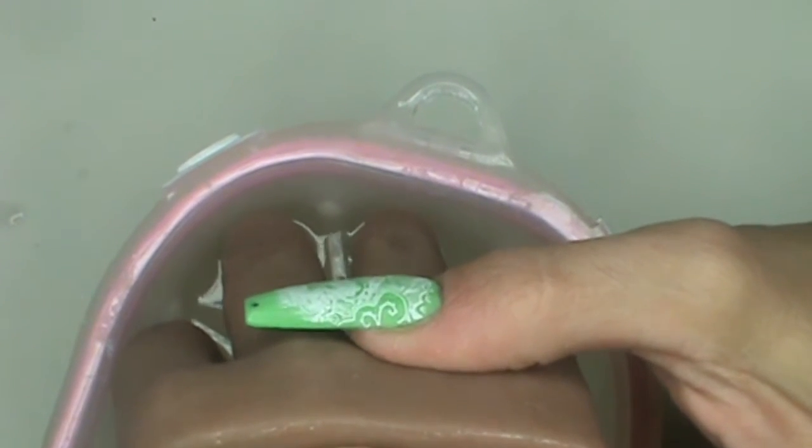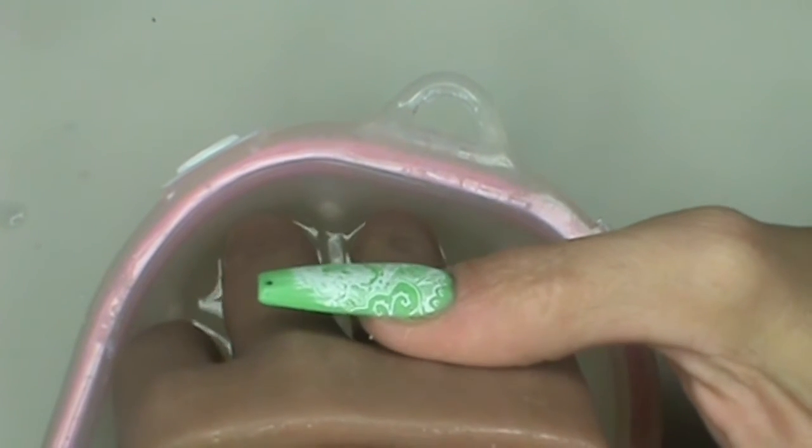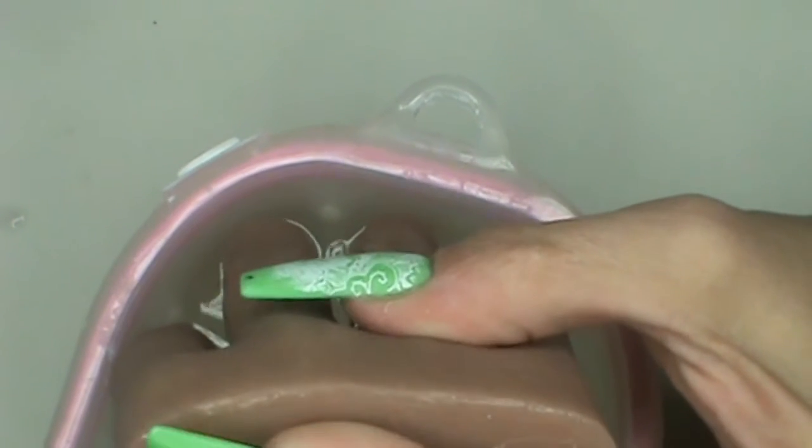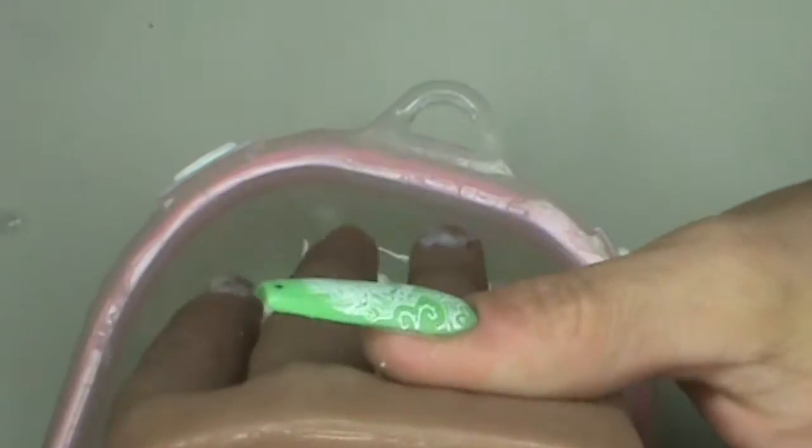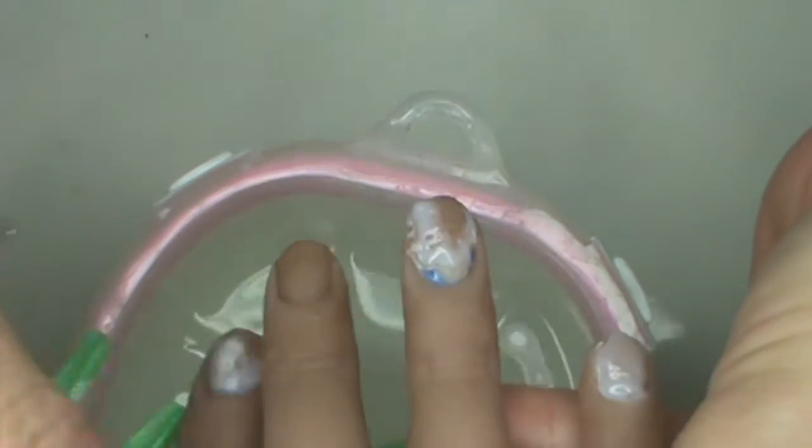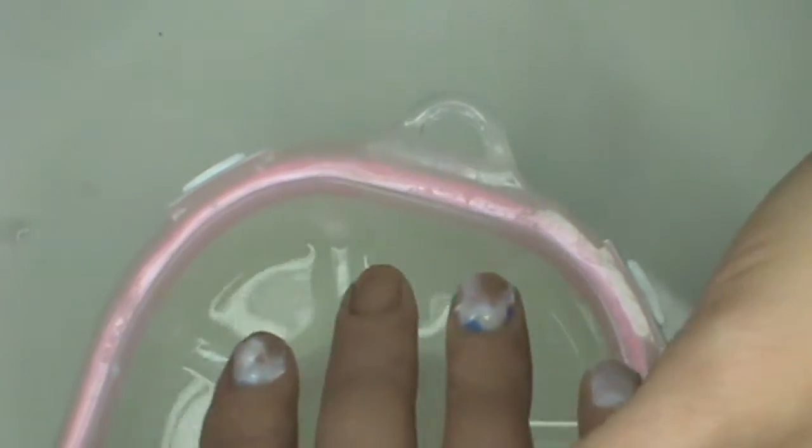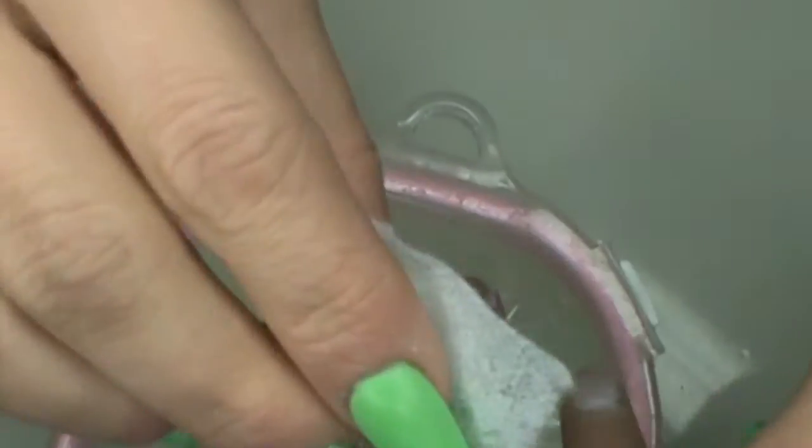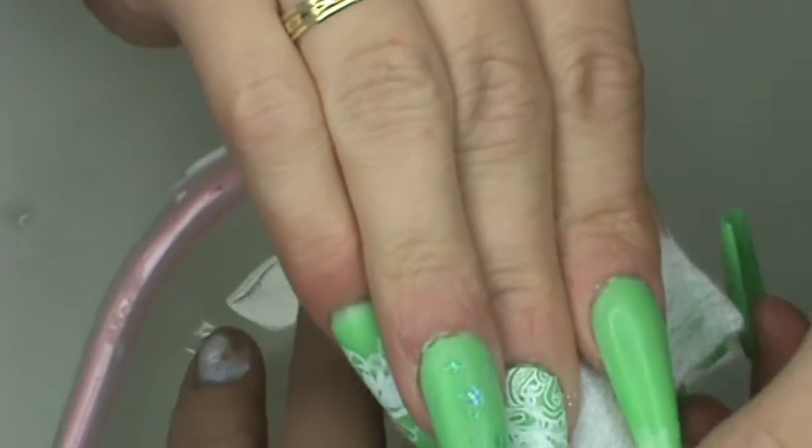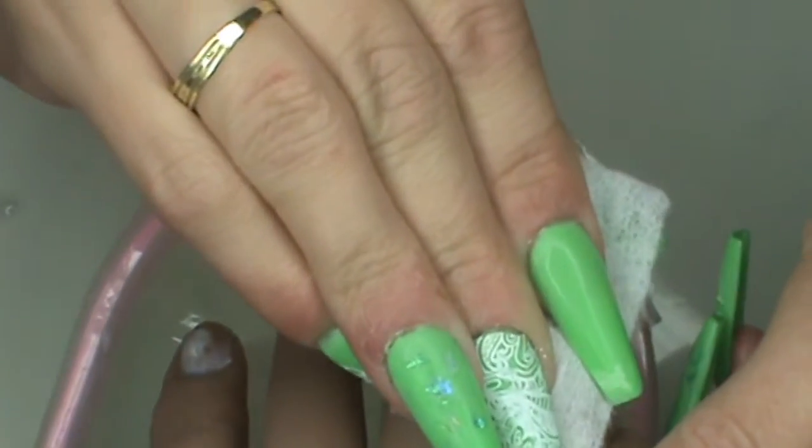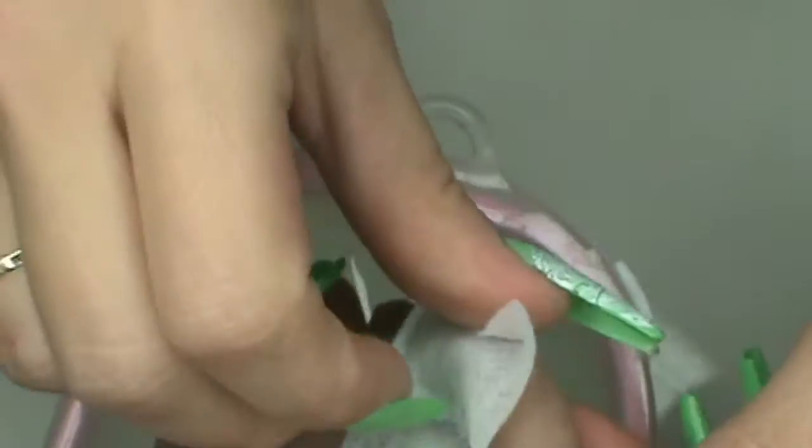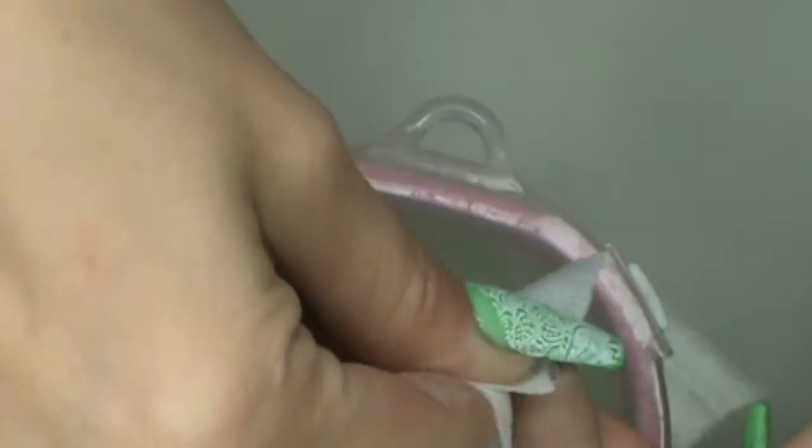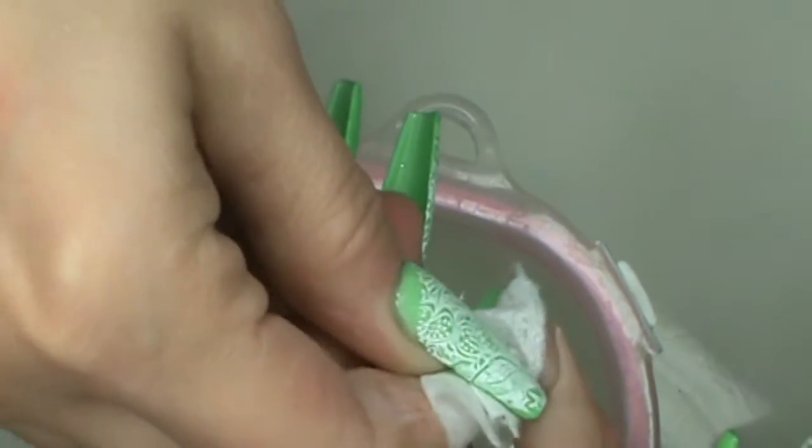All right now, so it's been about seven minutes and I'm going to pull these up out of here and see what they look like. So this is what it looks like after seven minutes. I'm just going to take a nail wipe and wipe these off. Now you have to make sure that you get all this stuff off and make sure that it's out from underneath the cuticles as well.